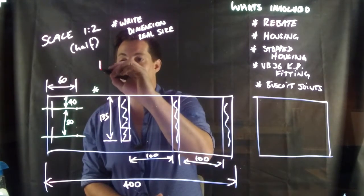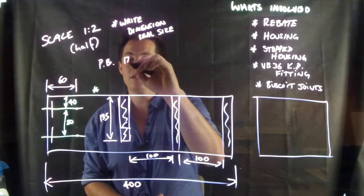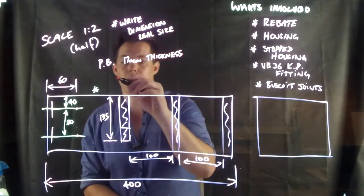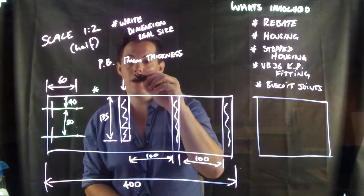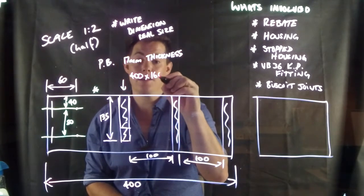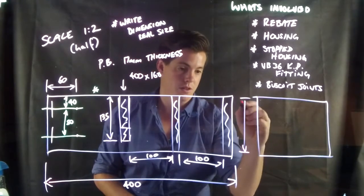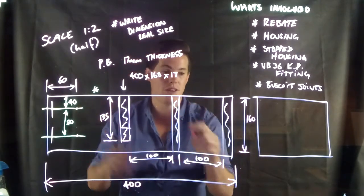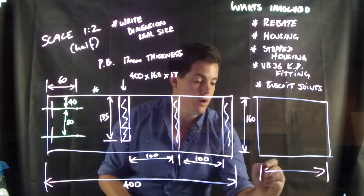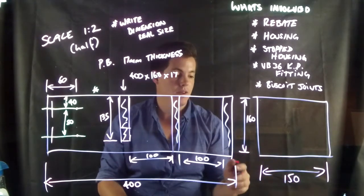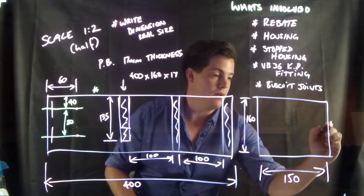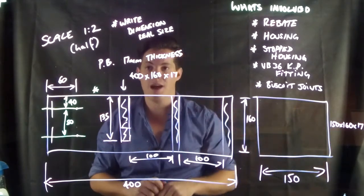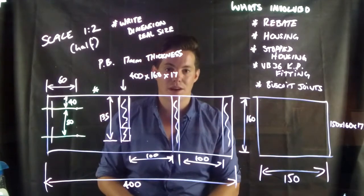And the only other thing I'll say is that we're using particle board which is 17 millimeters in thickness. So this piece here will be 400 by 160, that's what I forgot, the width here is 160, by 17. So pause the video now, draw that. Also draw this box, that's 150 in length, so that's 150 by 160 by 17 mil particle board as well. So draw those both up to scale and include the dimensions like I've done here in the picture.